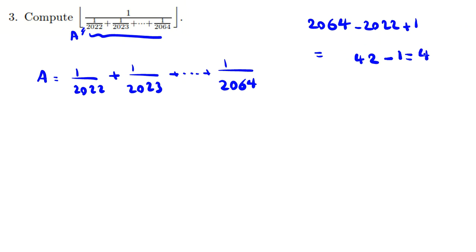Now we can say each fraction, it is the maximum fraction, it is the minimum fraction. So you can say A is strictly less than 43 over 2022. The maximum fraction is 1 over 2022, the minimum fraction is 1 over 2064.